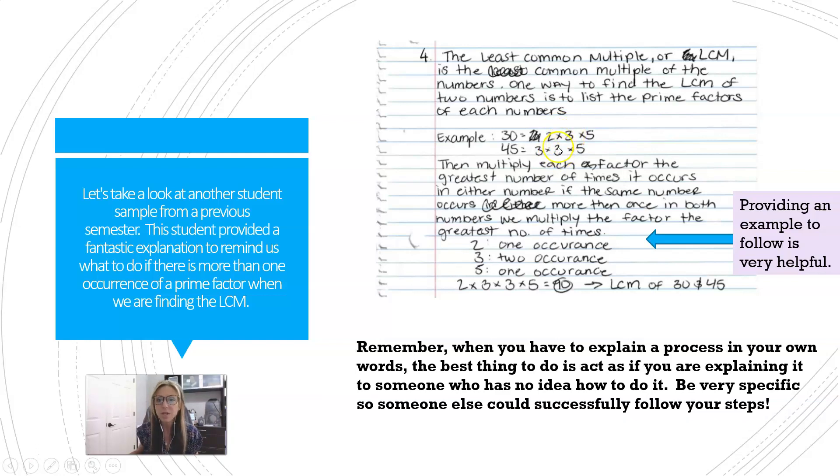Notice how 3 shows up twice in the list for 45. So what do you do when it shows up more than once? When there's more than one occurrence of the prime factors, maybe you should try here. Pause the video, read her explanation, and see if now you know what to do.